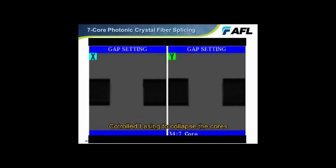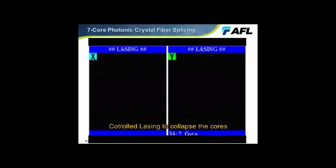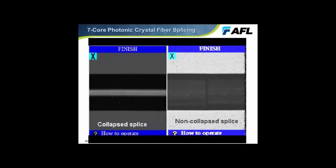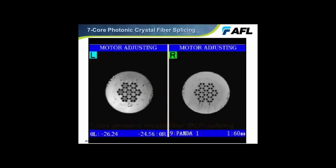If we want to, we can use controlled lazing to collapse the air holes — if we heat it more, it begins to look more like a conventional fiber. With some of these microstructured fibers, we're able to align them without end view by using a special method called IPA, or Interrelation Profile Analysis. As we rotate the fibers, we can see a pattern of lines in the transverse image. By comparing that pattern between the right and left fibers, we can perform a rotational alignment and splice the fibers together.